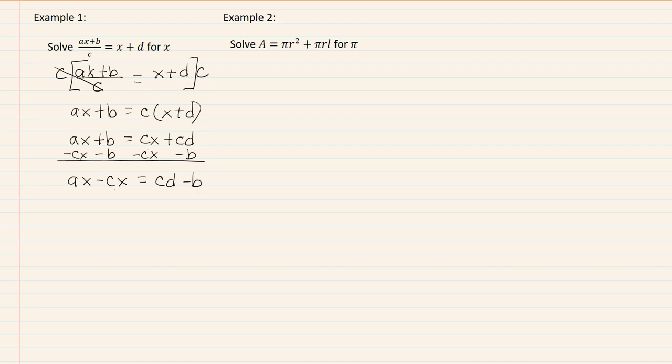Now we're going to factor the variable that we're solving for, which means I'm taking out the x. And then I'm going to divide by the stuff that's not the variable I solved for, in other words our a minus c. So I get x is equal to cd minus b all over a minus c.